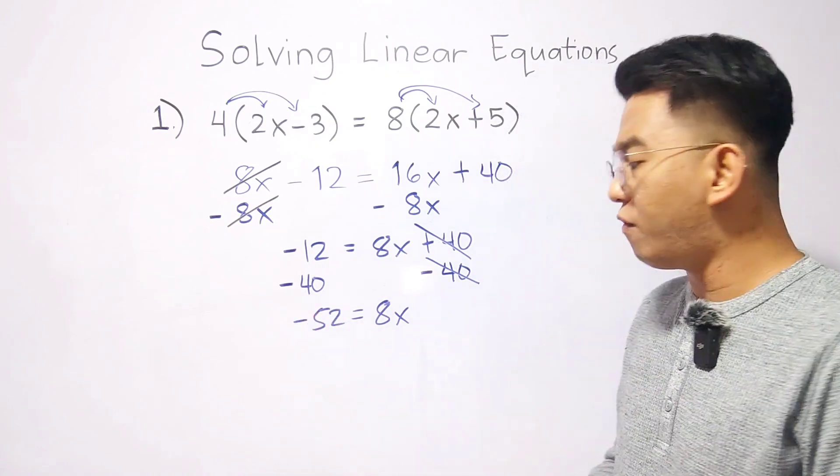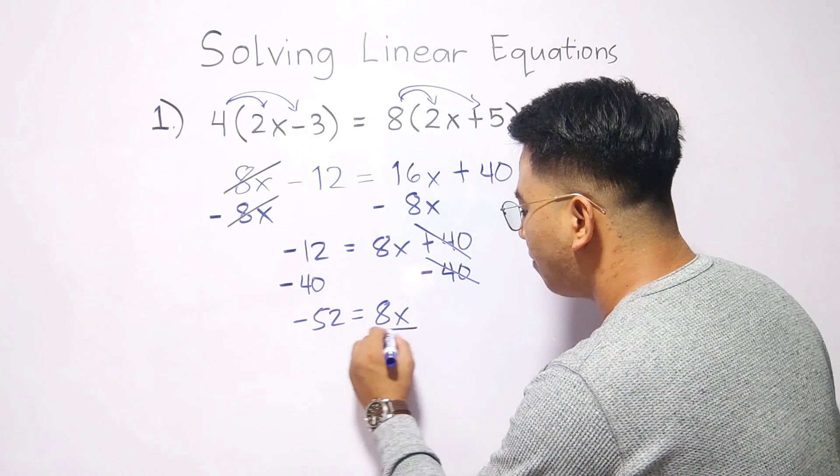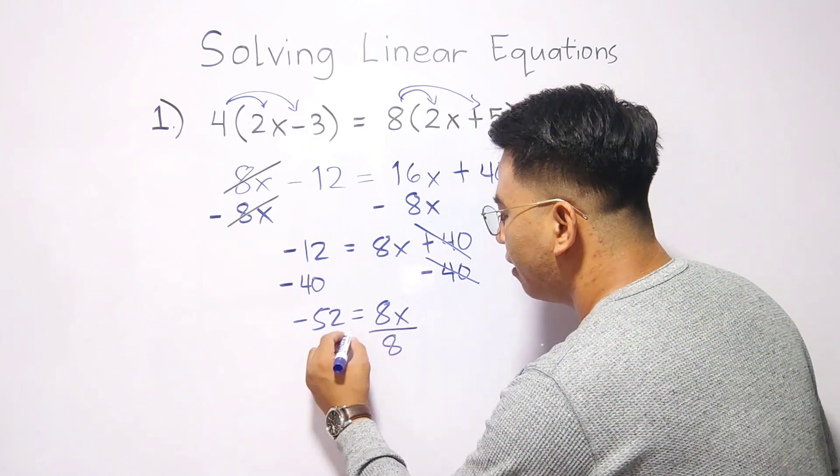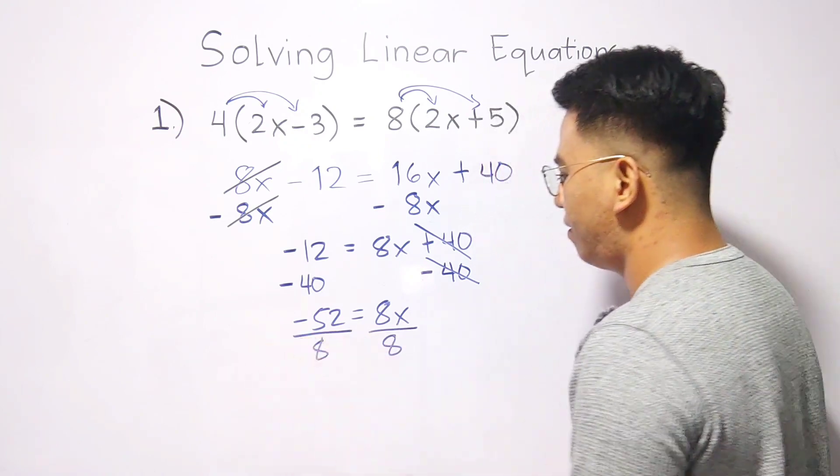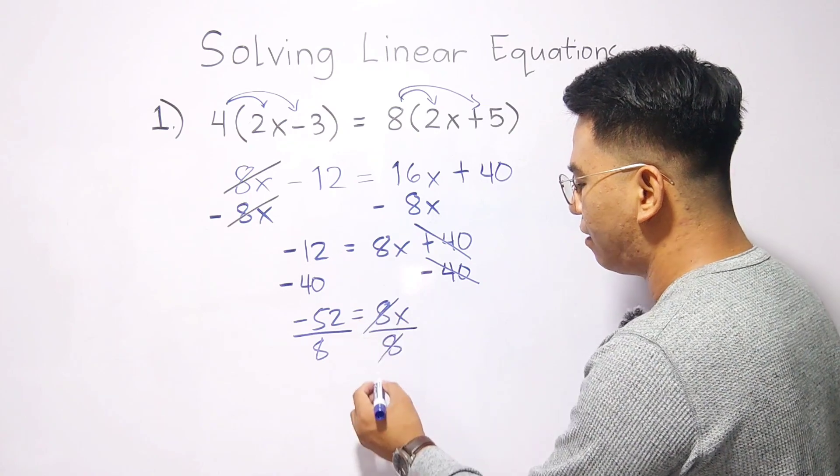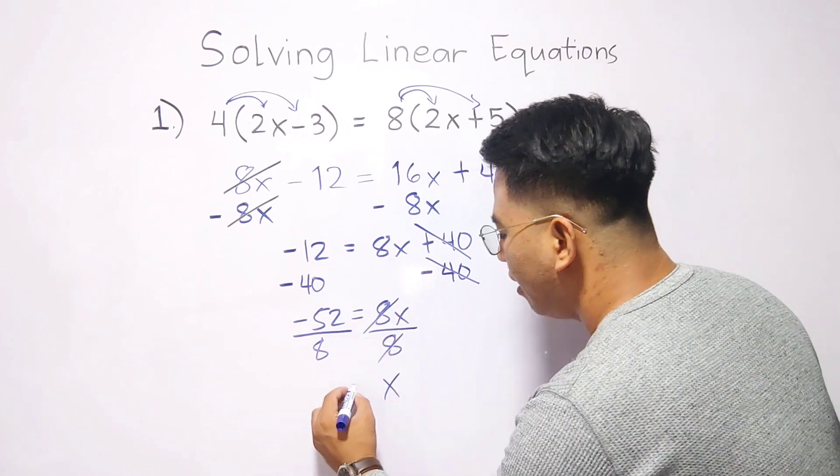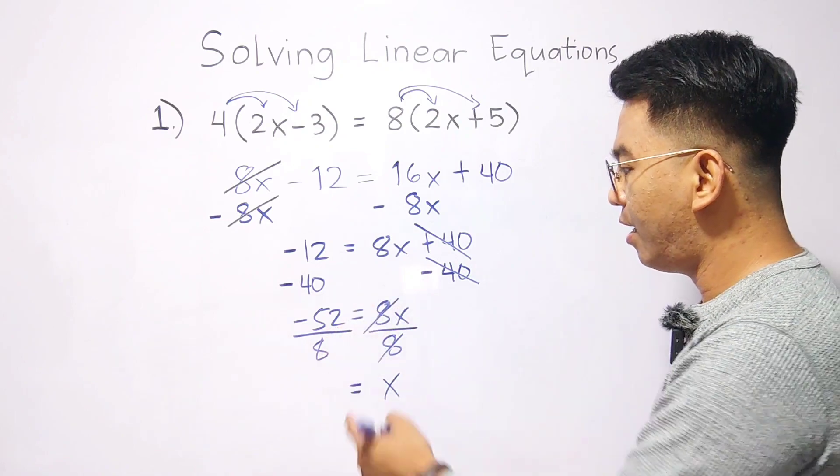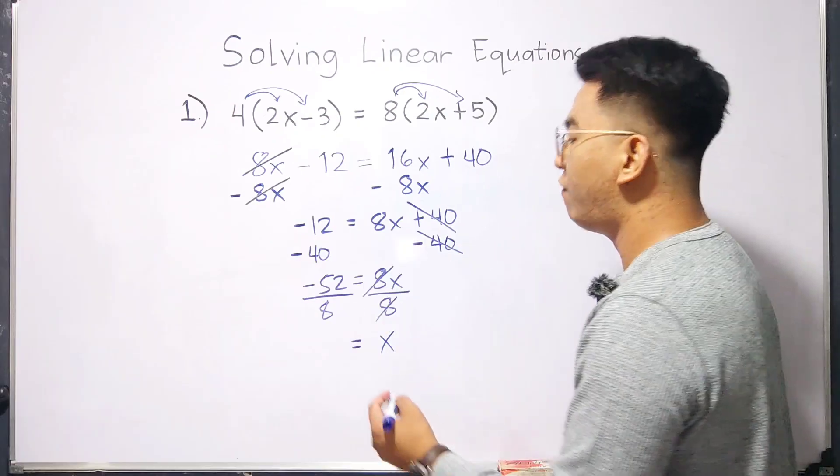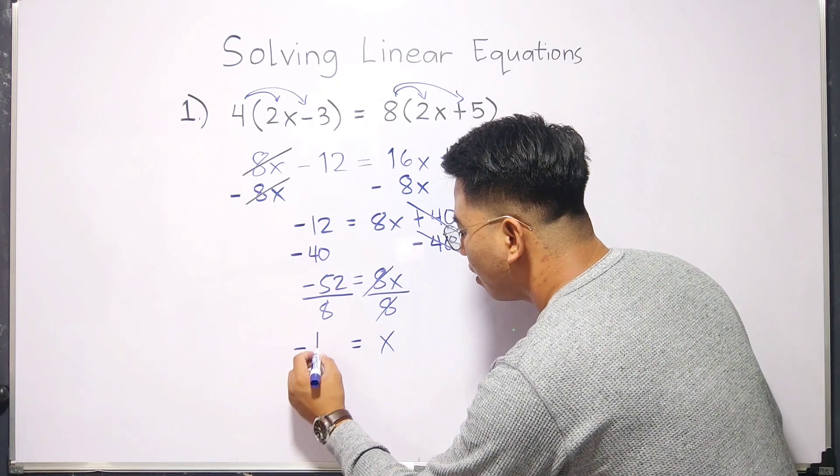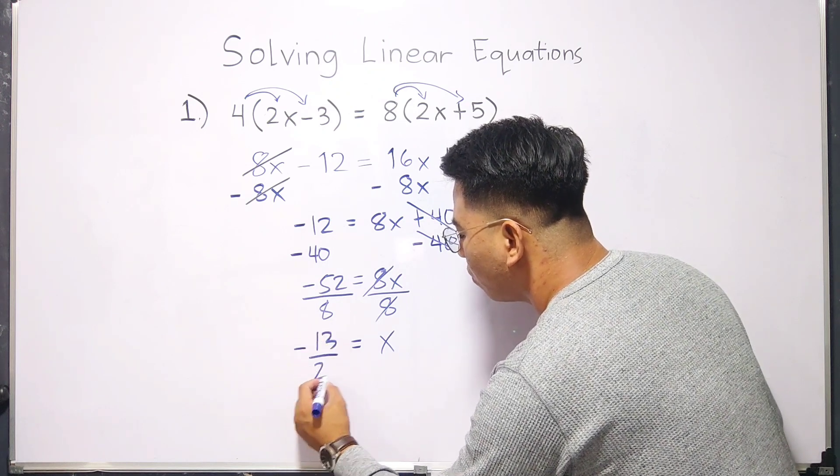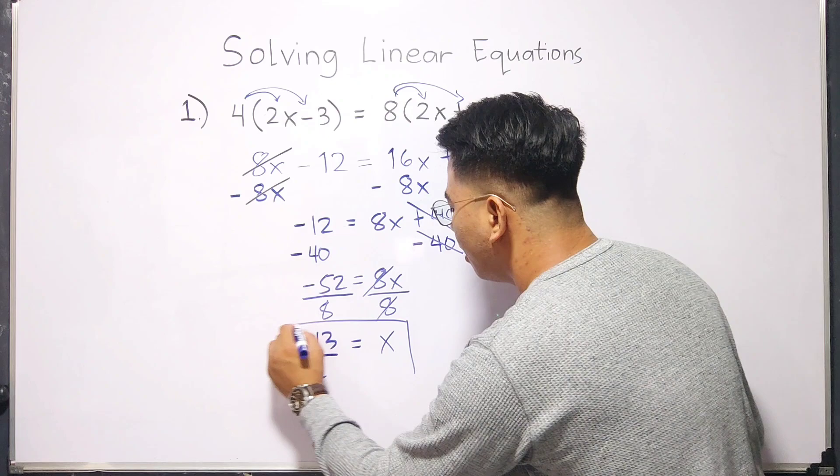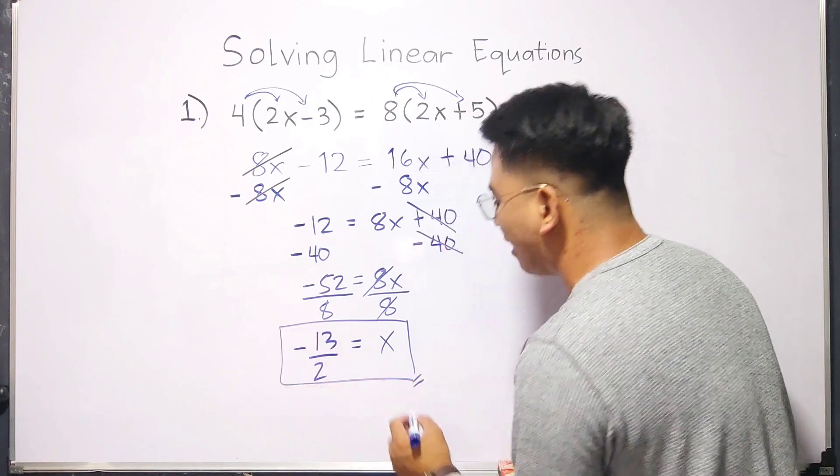And to finally solve for the value of x, divide both sides of the equation by 8. You have x is equal to negative 52 divided by 8, we have negative 13 over 2. And as you can see, this is the value of x.